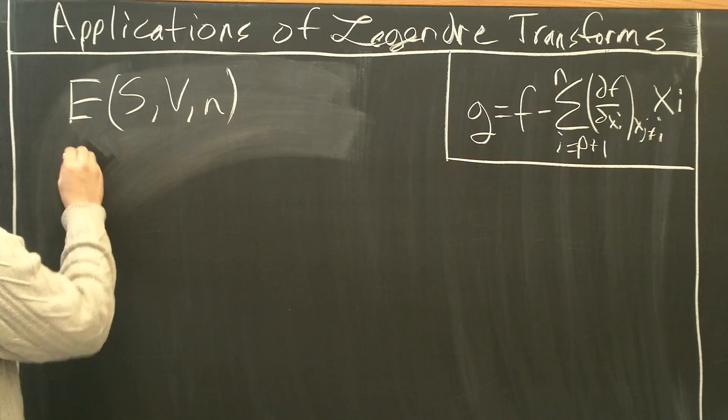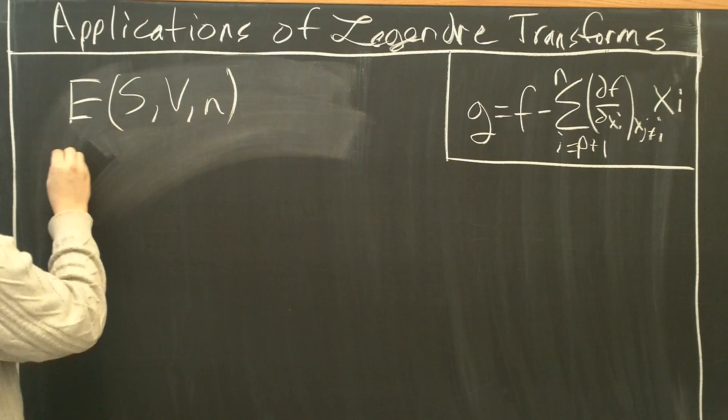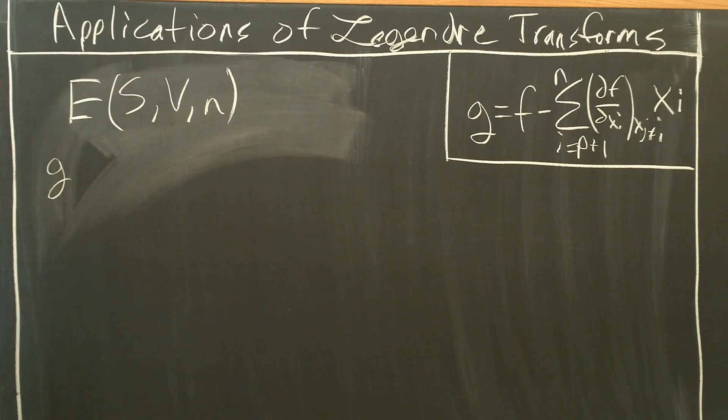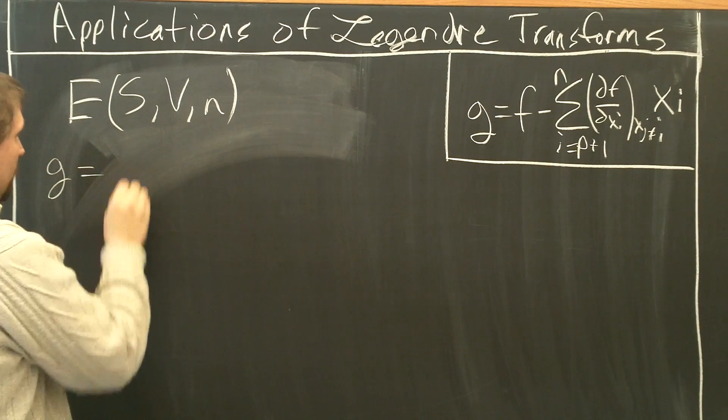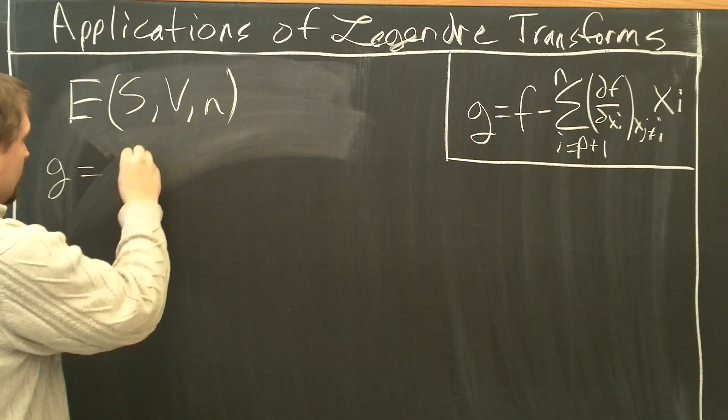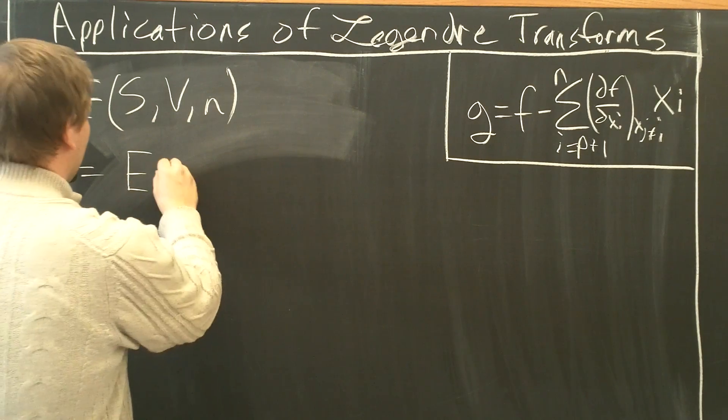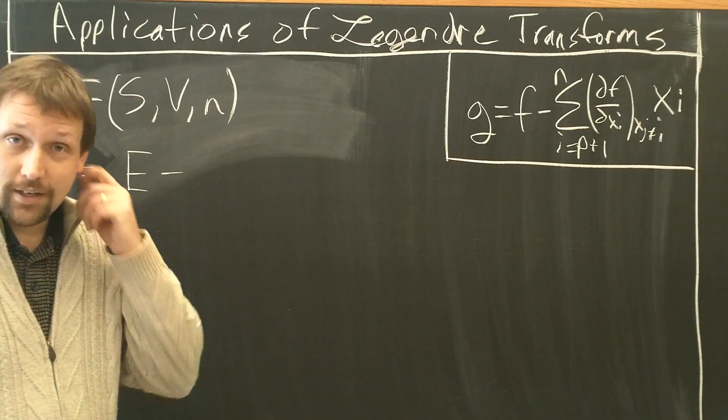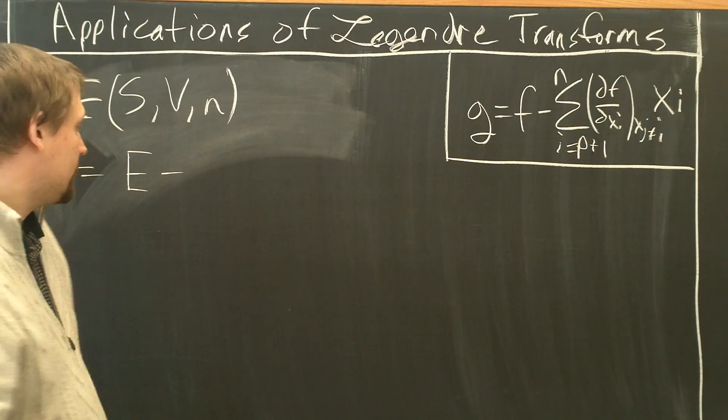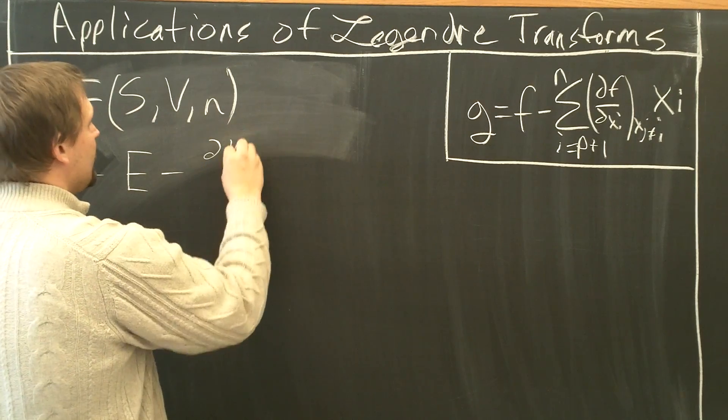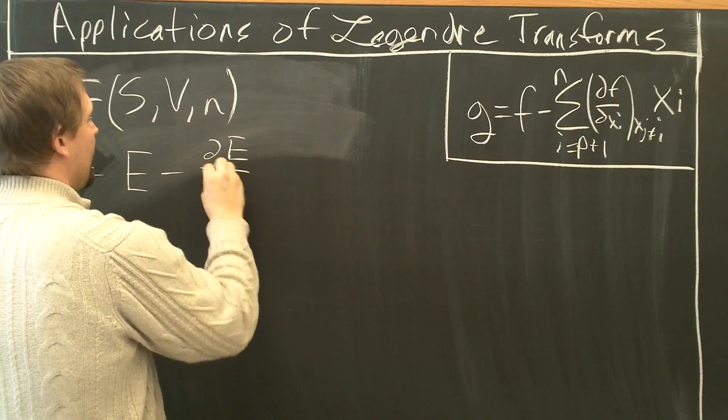Let's take the definition here, G, just to call it little g for this example. So we'll derive this new function. Equals E minus, let's take this Legendre Transform with respect to S. Del E, del S,